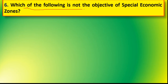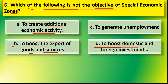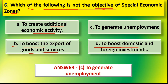Next question: which of the following is not the objective of special economic zones? Options are: option A to create additional economic activity, option B to boost the export of goods and services, option C to generate unemployment, option D to boost domestic and foreign investment. The correct answer is option C — to generate unemployment is not the objective of special economic zone. In fact, the objective of special economic zone is to generate employment.